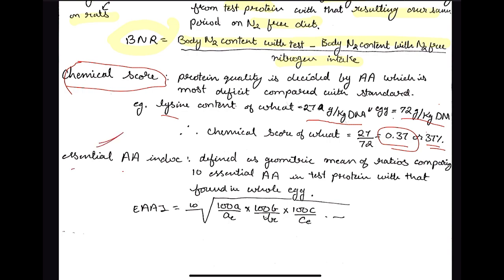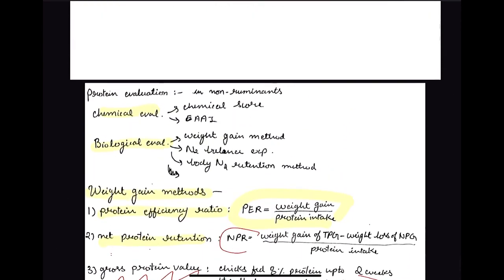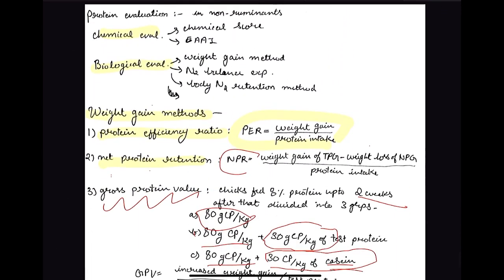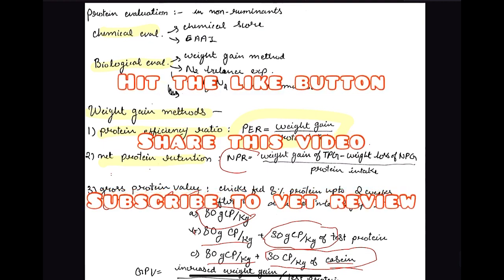To address that limitation, the second chemical method is the Essential Amino Acid Index (EAAI). Here we take the geometric mean of the ratios comparing all 10 essential amino acids in the test protein with those of the standard (egg). Using the geometric mean formula allows calculation of the Essential Amino Acid Index, giving a more complete picture of protein quality.